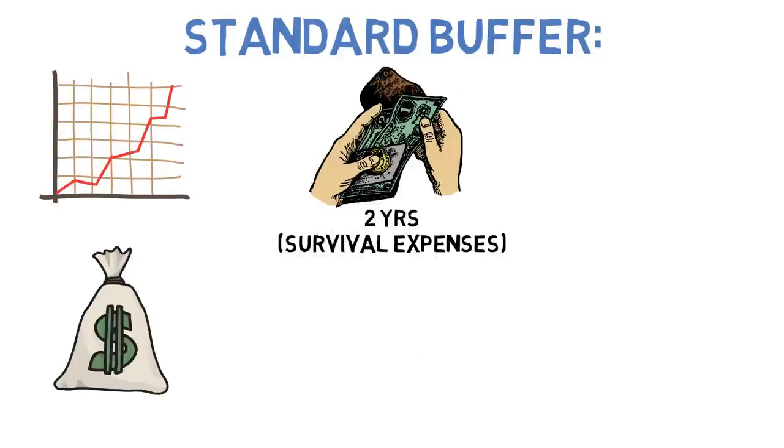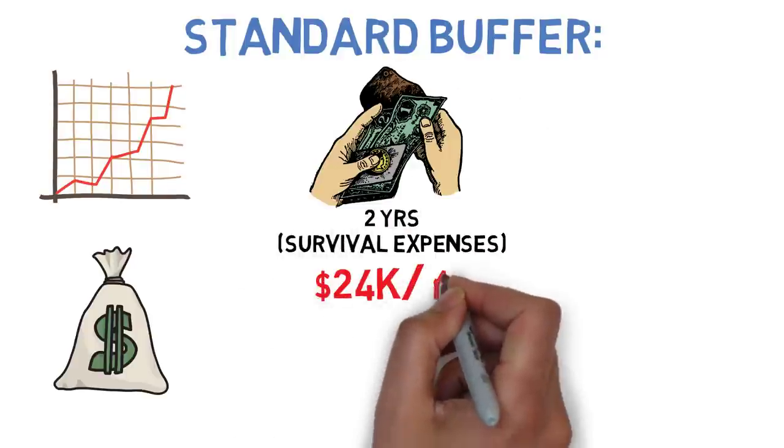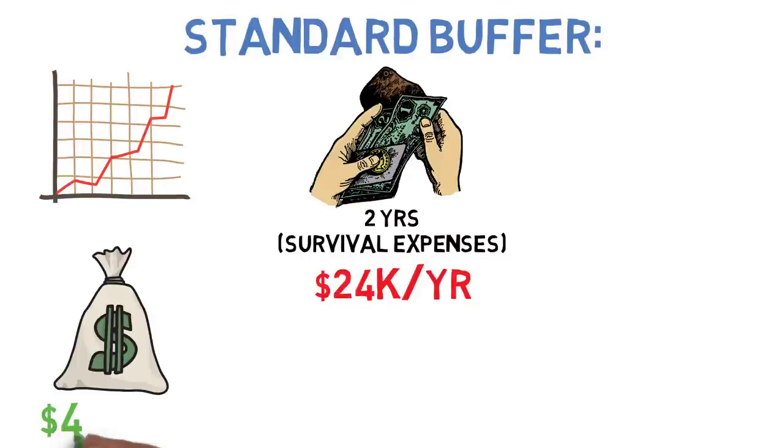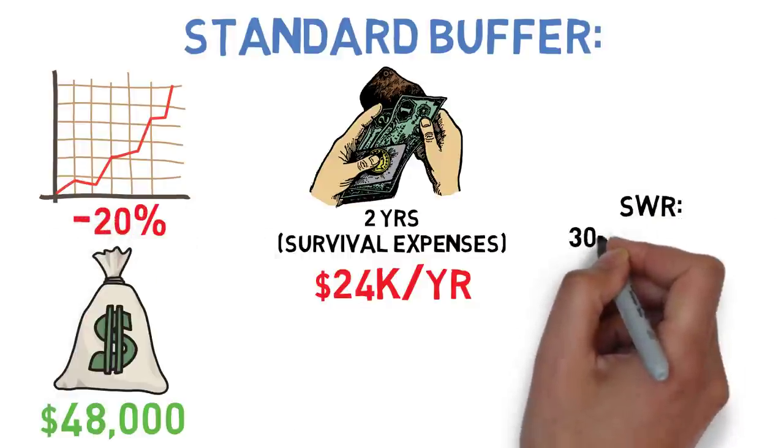For this video I'm going to assume those are $24,000 a year or around 2.4% of your initial nest egg, and we assume that we use that cash buffer to live on whenever the value of our investments in our nest egg fall by at least 20%.